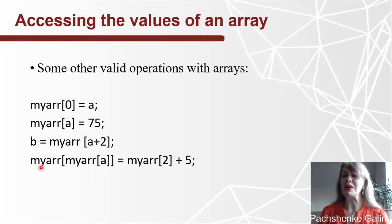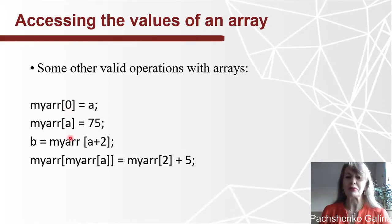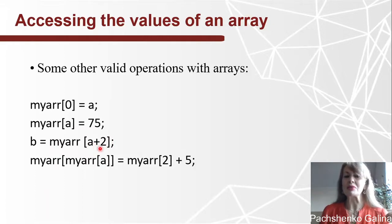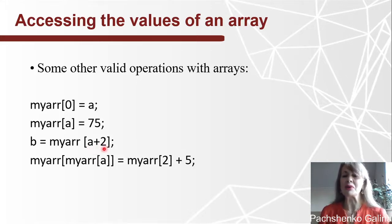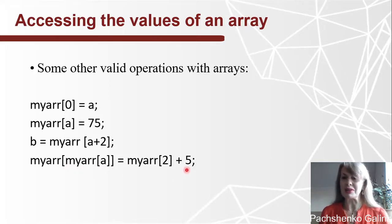Some other valid operations with arrays. We may assign to an element of the array any variable — for example, we assign the value of a variable. Or we may use a variable as an index, not just a number, but a variable plus a number; this variable must be of type int. And we may assign to some variable the value of an array element, using an expression as the index.